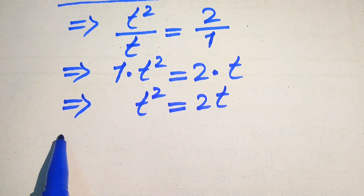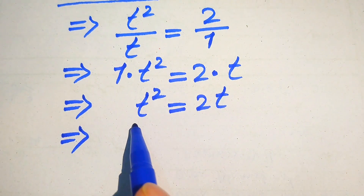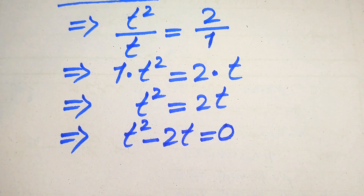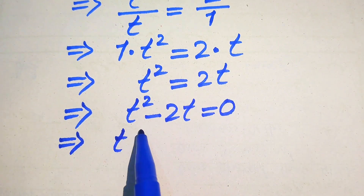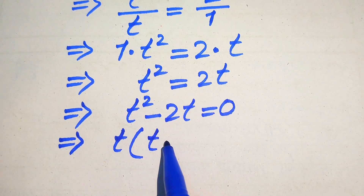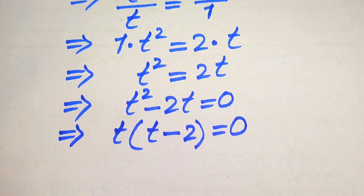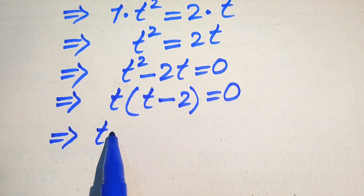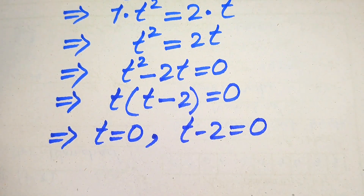In the next step, we move all variable terms to the left-hand side. Moving 2t gives us t squared minus 2t equals 0. We then factor out t, giving us t times (t minus 2) equals 0.